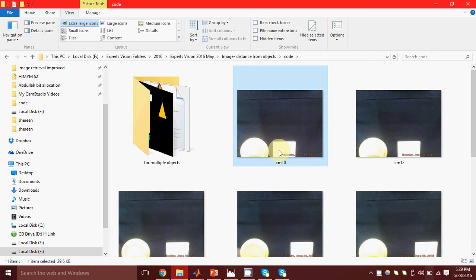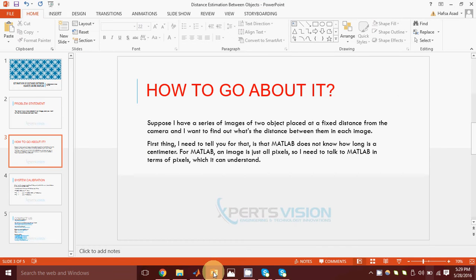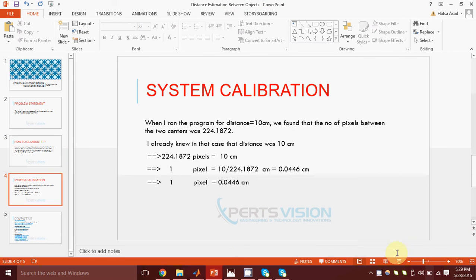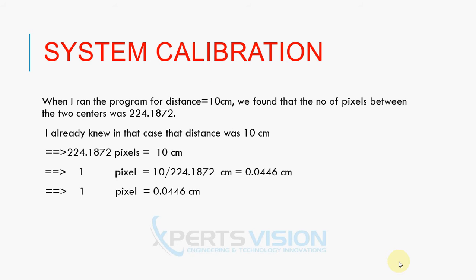I find out how many pixels lie between these two centers. Suppose that the number of pixels between the two centers was 224.1872. I already knew the distance was 10 centimeters. After equating them, I find out that one pixel makes up 0.0446 centimeters. This is the value with which I am going to calibrate my system.